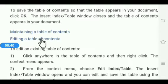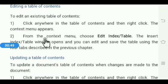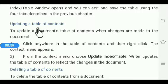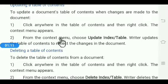Next is maintaining a table of contents. To edit an existing table of contents, click anywhere in the table of contents, then right-click, and from the context menu choose Edit Index/Table option. To update a table of contents when changes are made to the document, click anywhere in the table of contents, then right-click, and from the context menu choose Update Index and Table option.